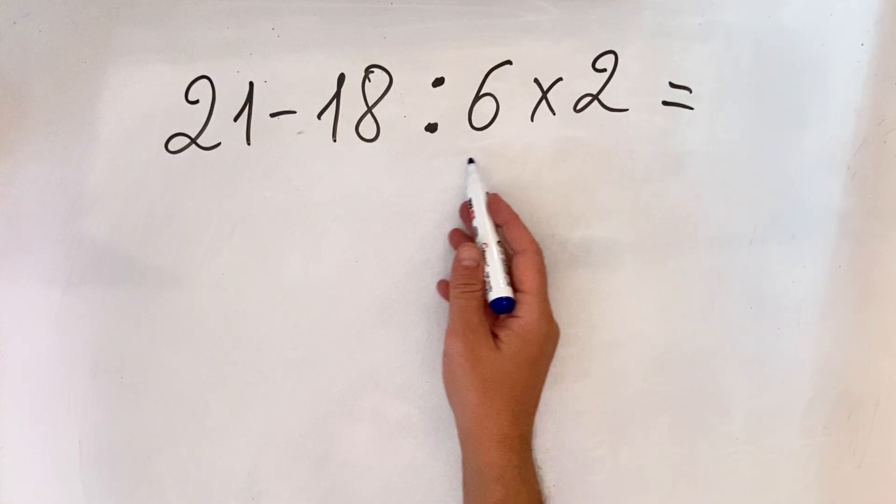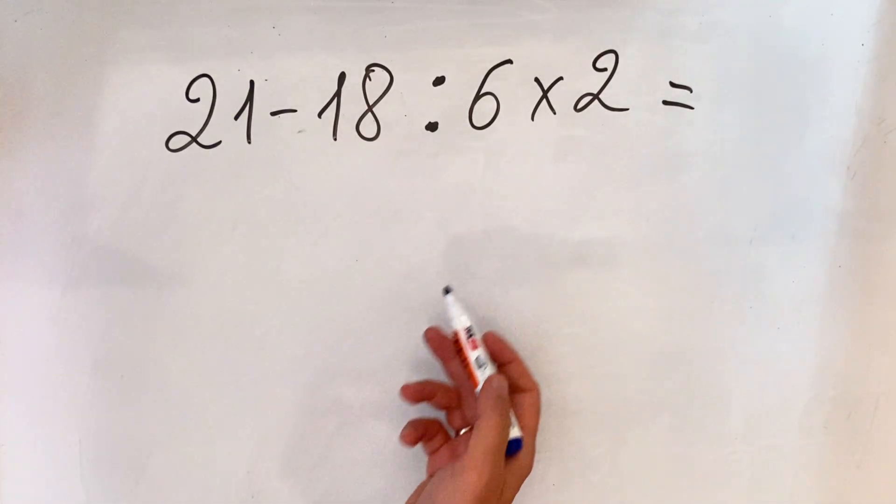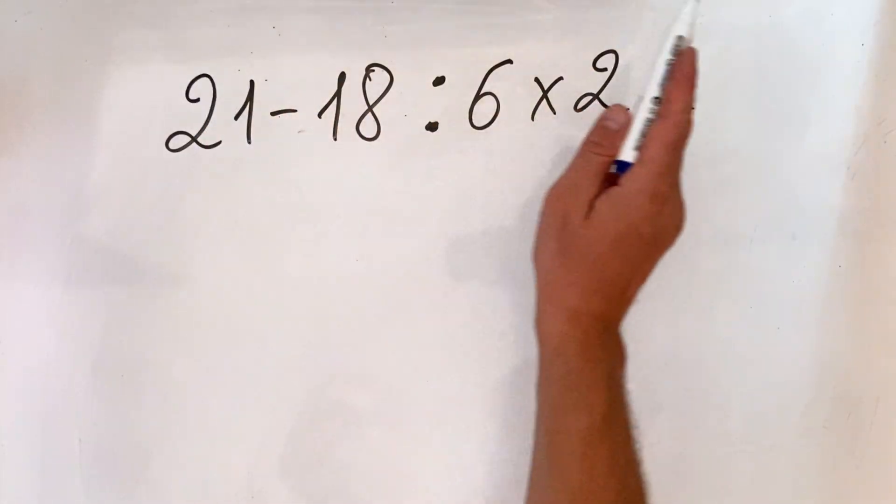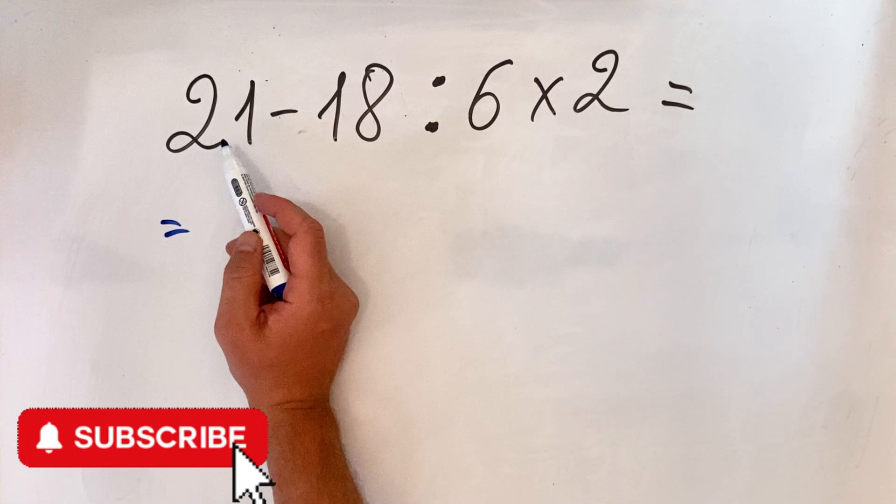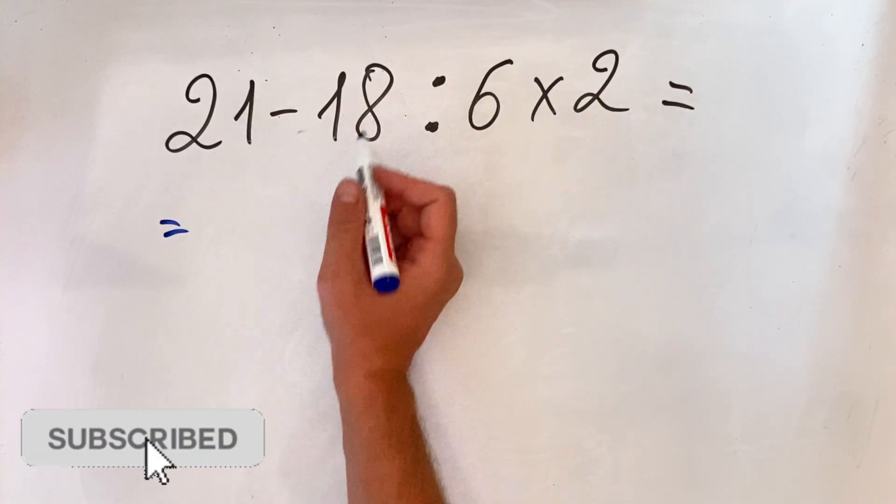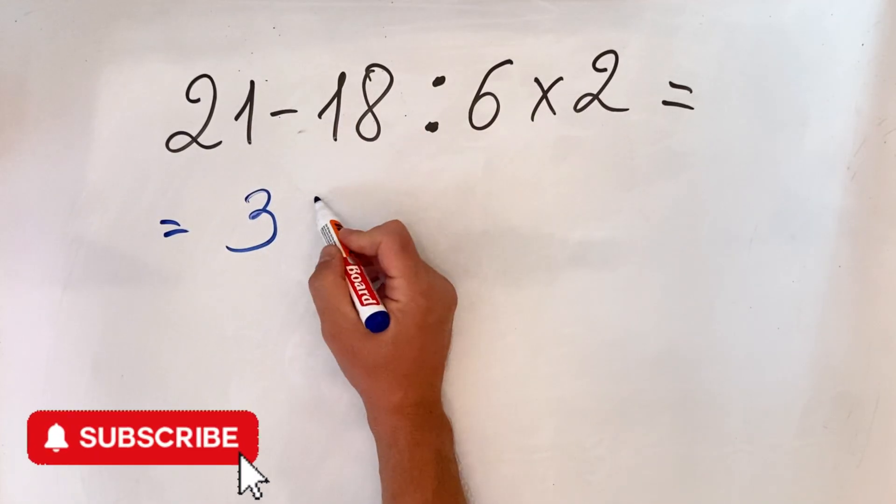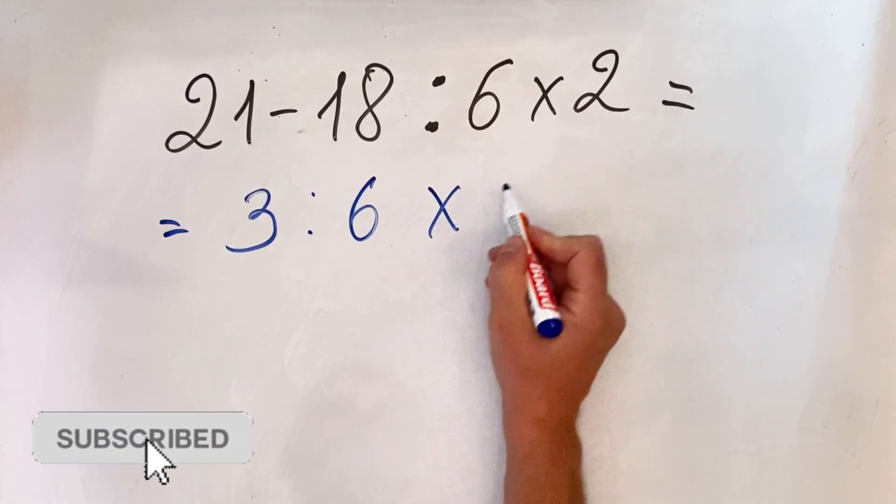Hello everyone. The mistake that most people make when they look at this type of equation is they try to do everything from left to right. In this case, they do the subtraction first: 21 minus 18, which is 3, then they write it as is.